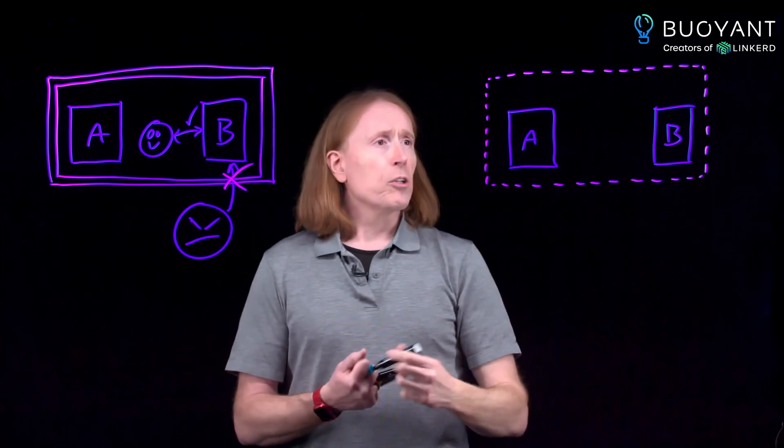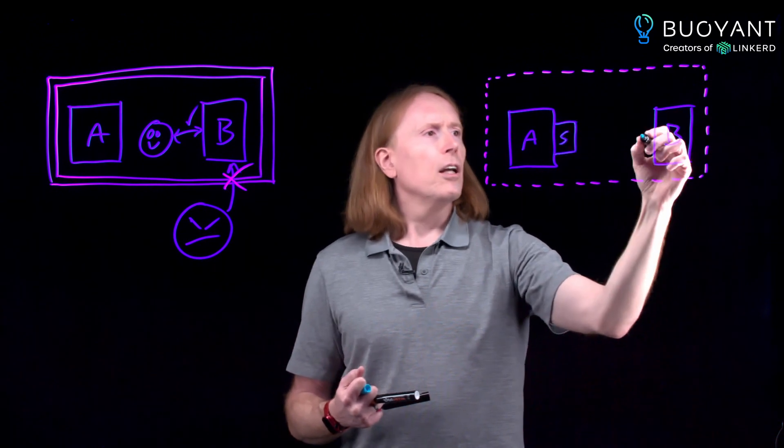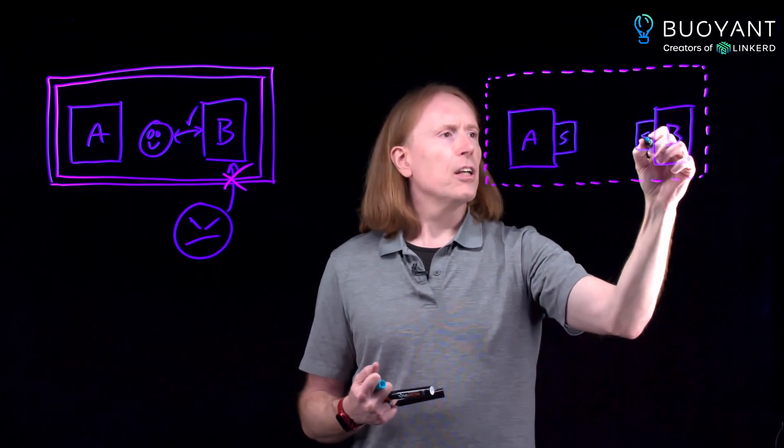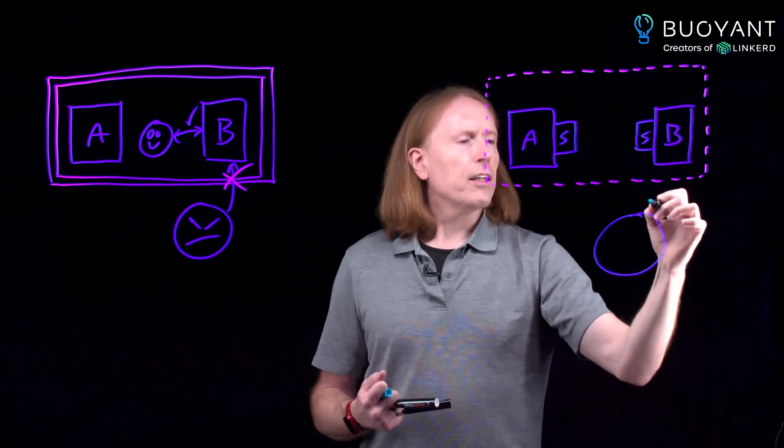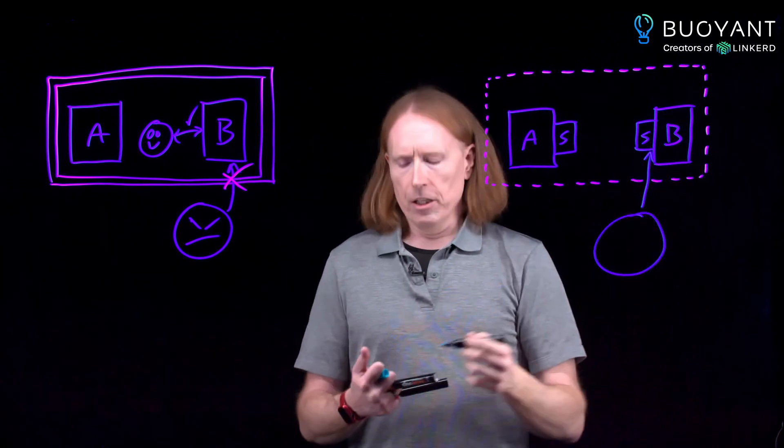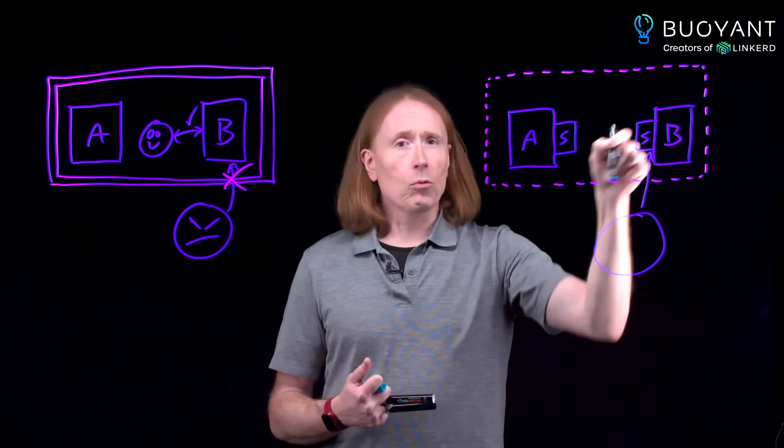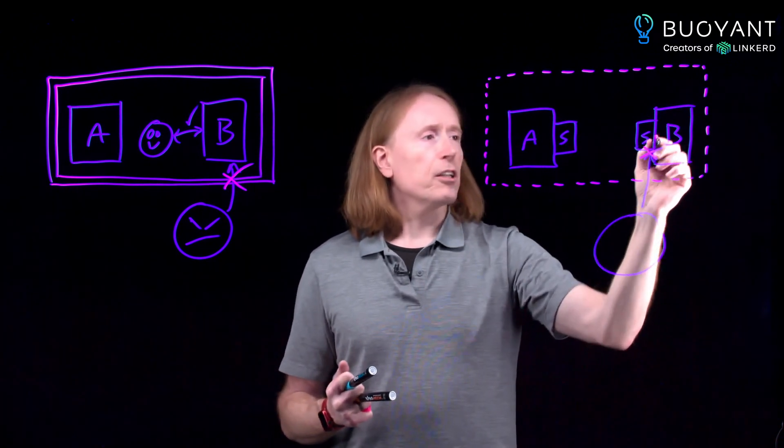Instead, what we do with a service mesh is that we put sidecars in next to each of our workloads, and then we force all the network communications to go through the sidecars. So now when our actor on the outside, if they manage to get something through the firewall of the cluster to the sidecar, this sidecar will check it and decide if it's allowed. And the sidecar will be the one to decide to block it.